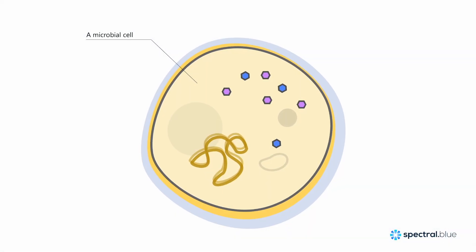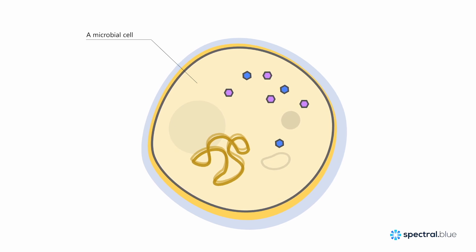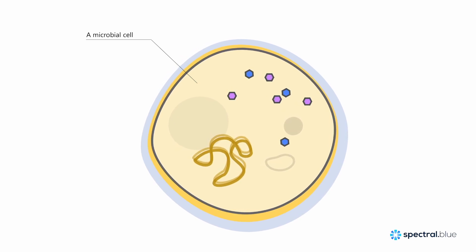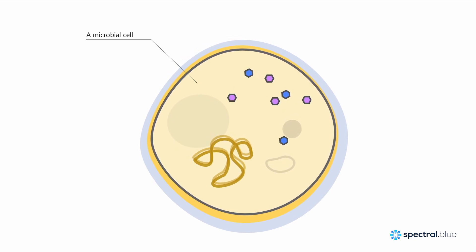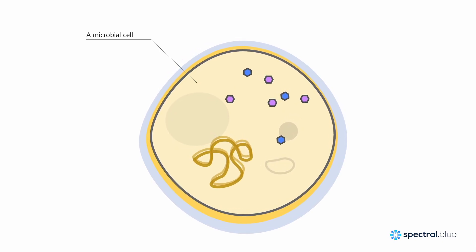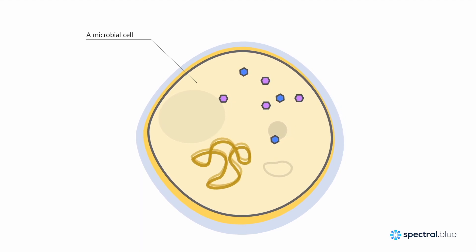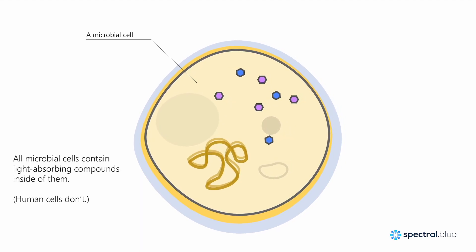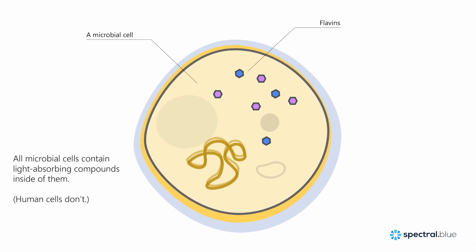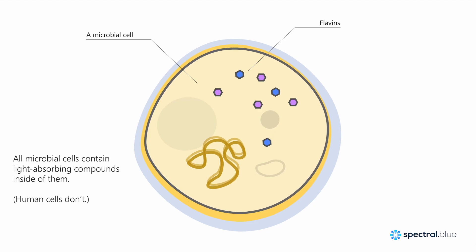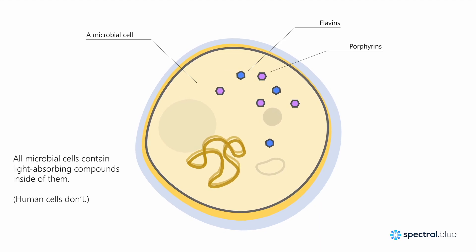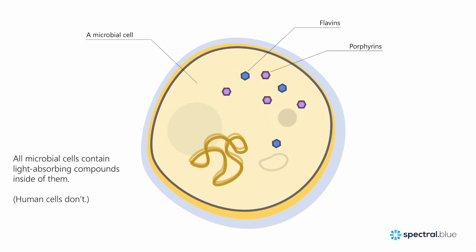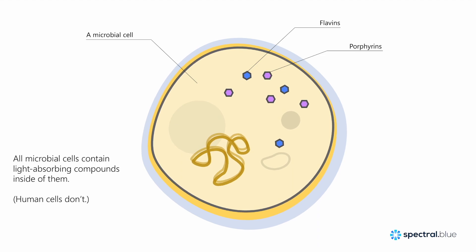Here's a typical microbial cell. It could be a bacterium, mold, or yeast cell. We know that all microbial cells contain light-absorbing compounds inside of them. Examples of such compounds are flavins and porphyrins, which are activated by very specific wavelengths of blue light.